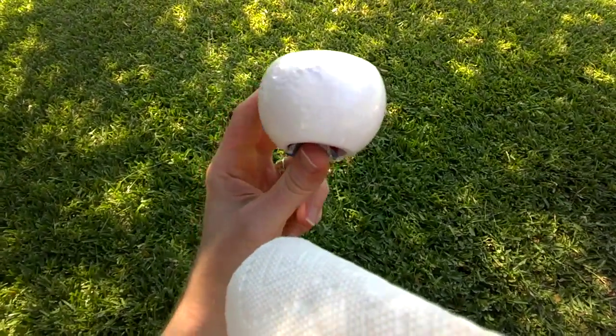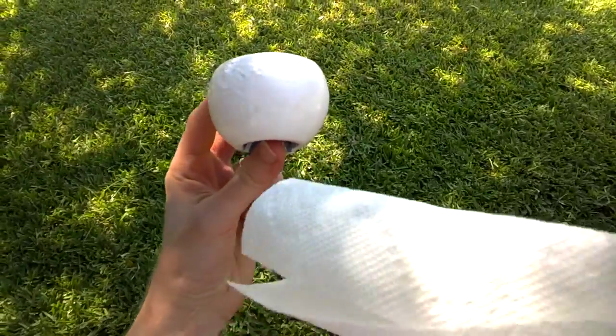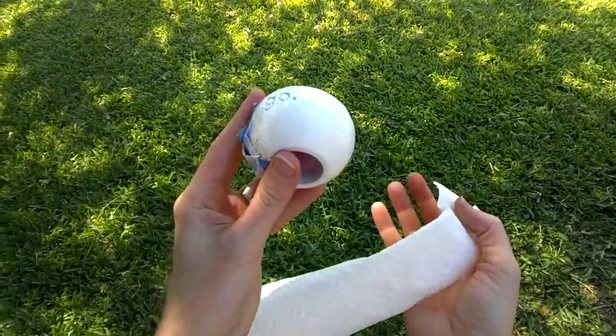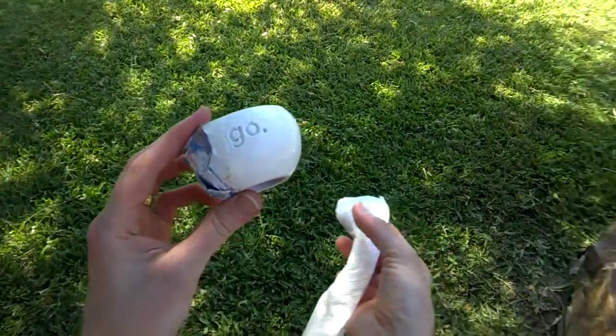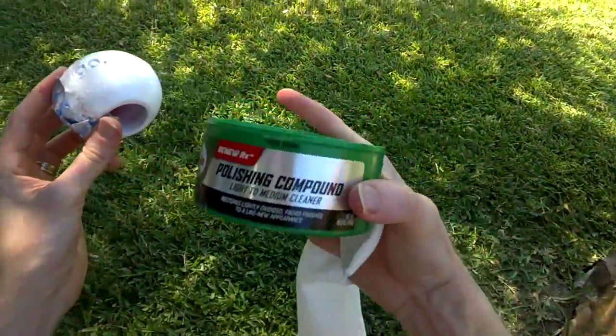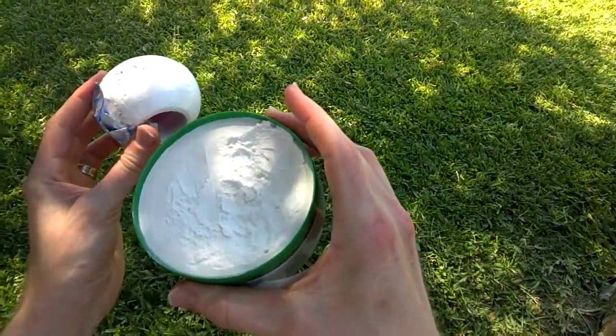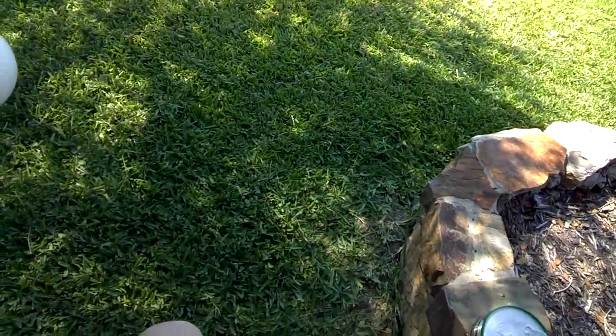So now I've spent about 20 minutes polishing this with the rubbing compound. Now it's time to move on to the polishing compound. This is the Turtle Wax brand. You can see it's a little different, it's a little finer.